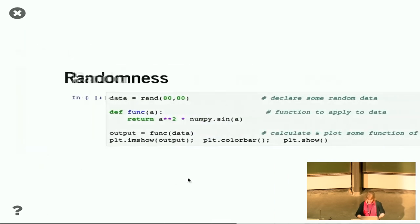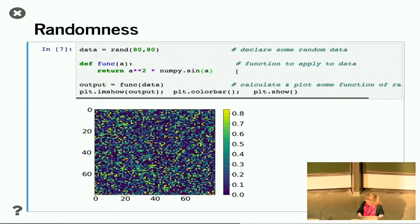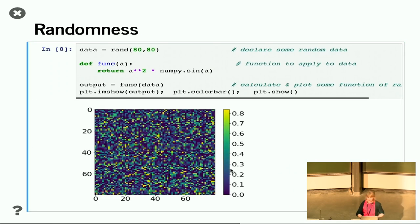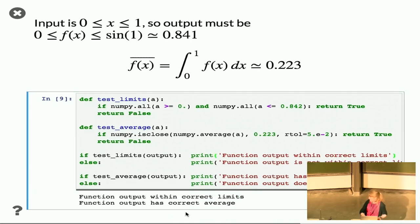So if you go to another example, I'm going to generate a load of random data here. So these are just a load of random numbers, and I'm going to run some function on it. So I'm going to square the number and times it by its sign. If I run it again, different answer. Maybe you can't see, but this is changing every time. And so let's do some tests of this. So I know that my input's between 0 and 1. So my output must be between 0 and 0.841. I can also calculate the average and check that that's correct. So I know that the average of this function must be the integral of it over its domain. So that's 0.223. So if I run this test, then hooray, my function has the correct limit. So it's between 0 and 0.841. And it's got the correct average.